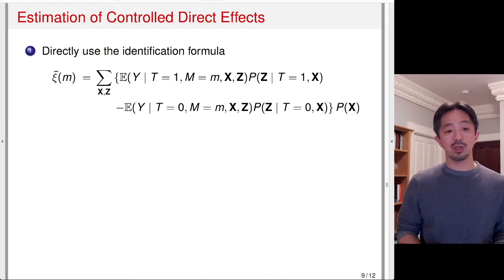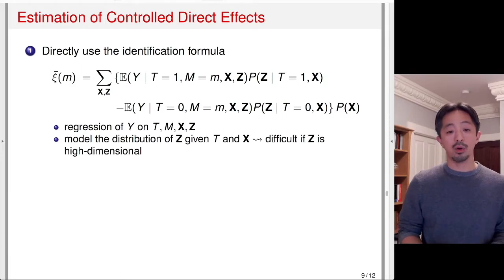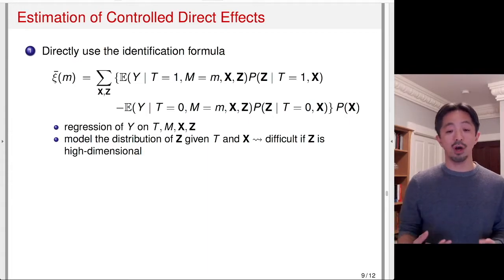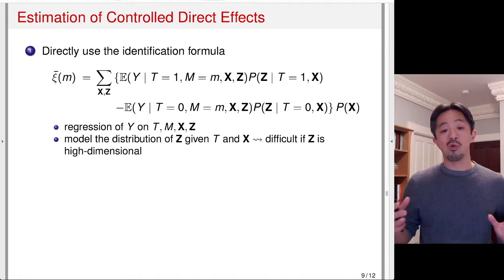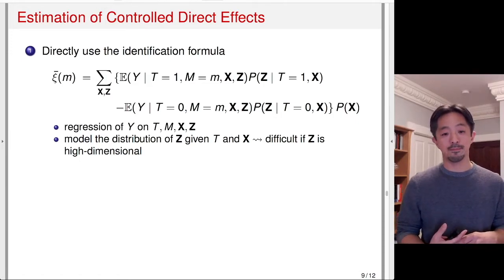The first approach is to directly use the identification formula. I reproduced the identification formula for the control-directed effects here, and there are two things you have to do. The first is to regress Y, the outcome, on T, M, X, and Z — that's the conditional expectation in the formula. The second is to model the conditional distribution of Z, the post-treatment variable, given the treatment and the pre-treatment covariates X. This step might be difficult if Z is high-dimensional — that is, if you have lots of post-treatment confounders, this will require modeling those post-treatment confounders jointly, which may not be easy.